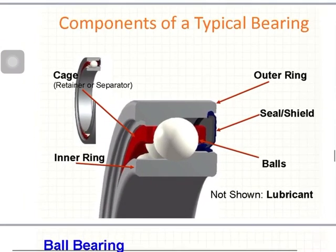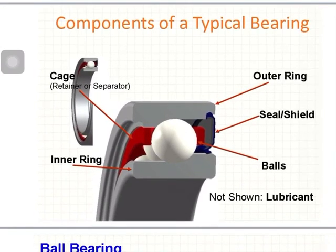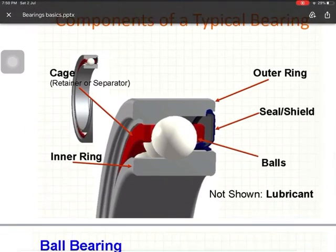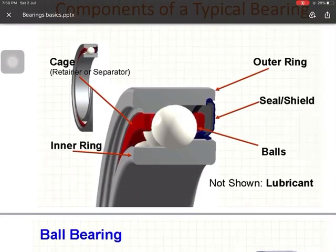There are mainly four components in any bearing: the inner ring, the outer ring, the cage, and the seal, along with the rolling elements — either balls or rollers. The cage is mainly used to hold the rolling elements at equal distances from each other.